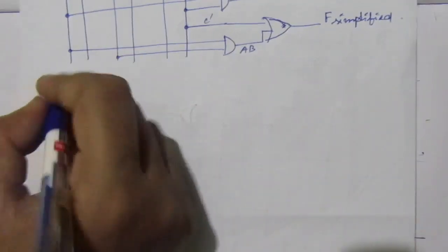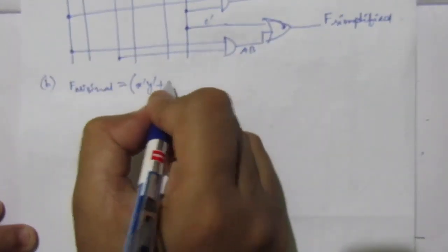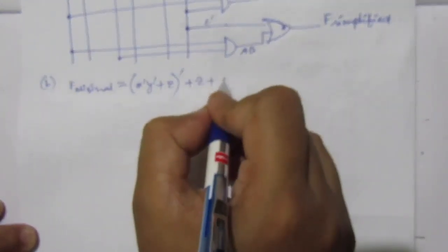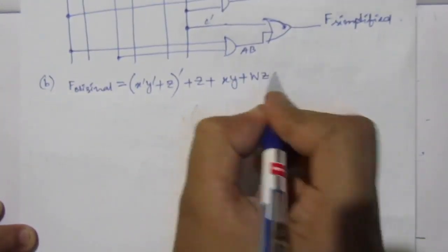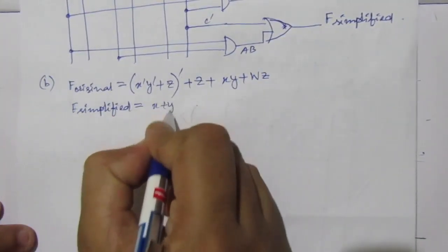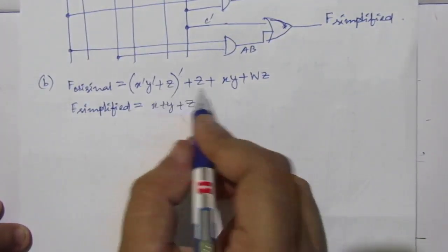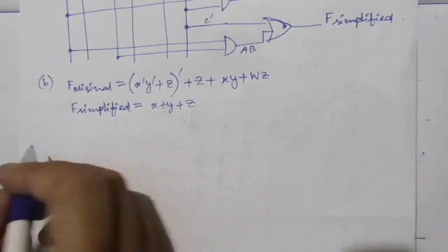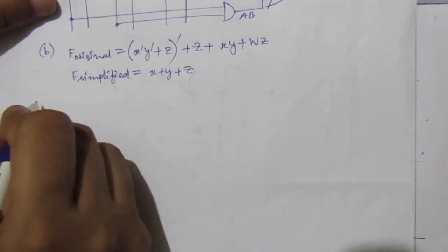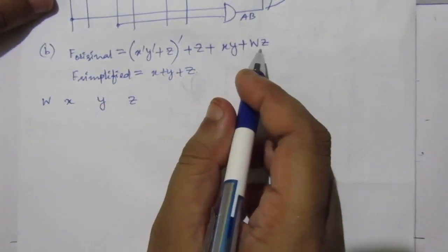Now let us go to the second part of the problem, part b. For part b, f original equals (x̄·ȳ + z)̄ plus z plus x·y plus w·z. And f simplified equals x plus y plus z. Here we have four variables: x, y, z, and w. We will have four input lines. We can see there is no w̄, so we need not complement the w line.